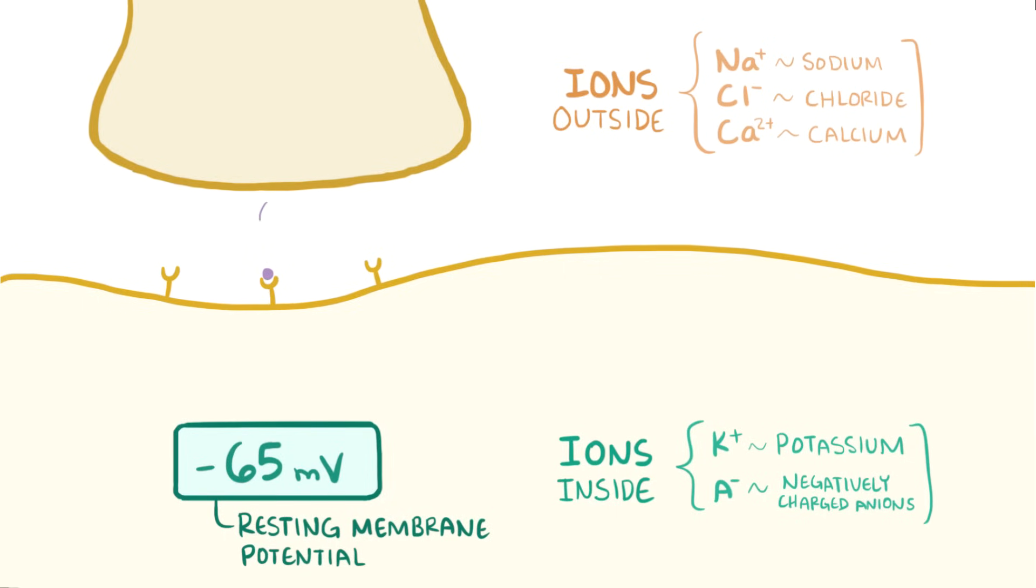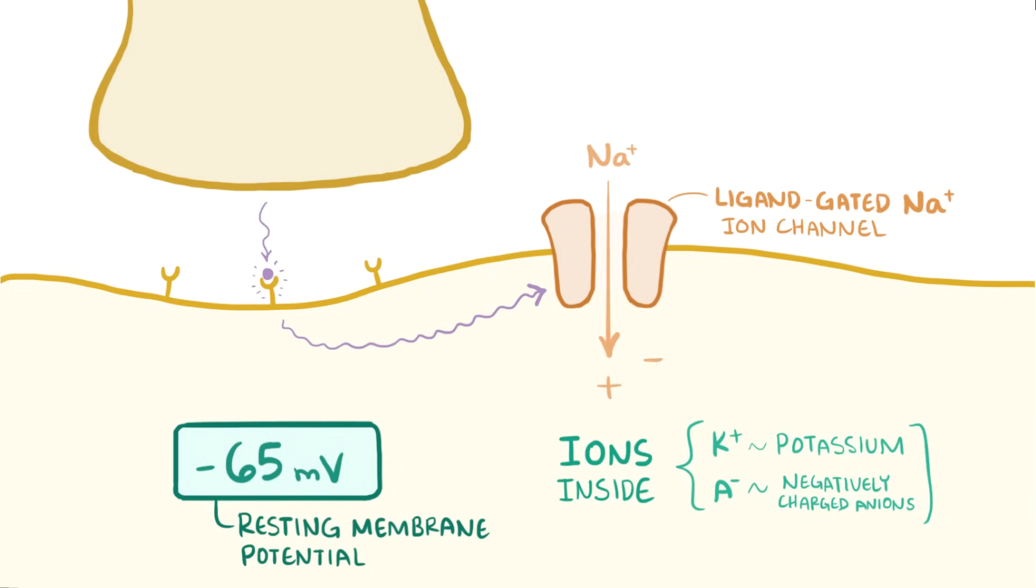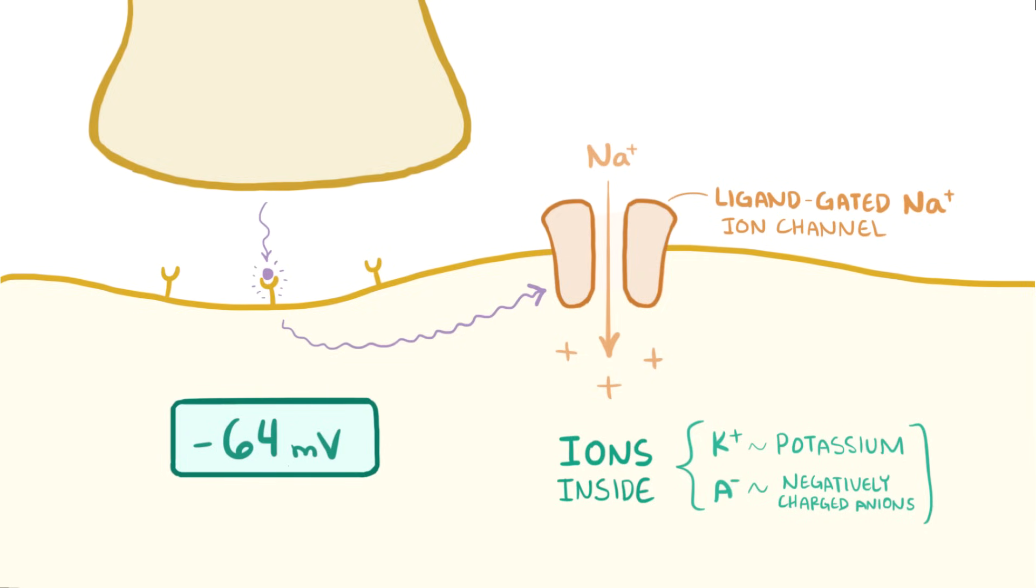When a neurotransmitter binds to a receptor on the dendrite, a ligand-gated ion channel opens up to allow certain ions to flow in, depending on the channel. Ligand-gated literally means that the gate responds to a ligand, which in this case is a neurotransmitter. So let's take the example of a ligand-gated sodium ion channel, which when it opens lets sodium flow into the cell. The extra positive charge that flows in makes the cell less negative, since remember it's usually negative 65 millivolts, and therefore less polar, so that's why gaining positive charge is called depolarization.